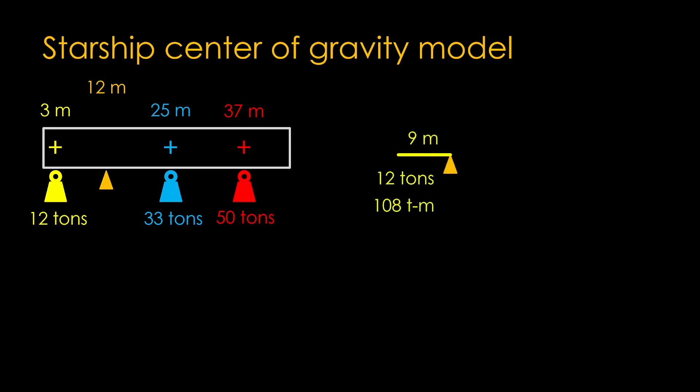Instinctively, we would say that the right side is much heavier, but can we come up with a mathematical solution? We can express this in terms of torques. On the left side, we have a weight of 12 tons, 9 meters to the left of the fulcrum, giving us a torque of 9 times 12, or 108 ton meters. On the right side, we have 33 tons, 13 meters to the right of the fulcrum, giving us 429 ton meters, and 50 tons 25 meters from the fulcrum, giving us 1250 ton meters. Clearly this does not balance.